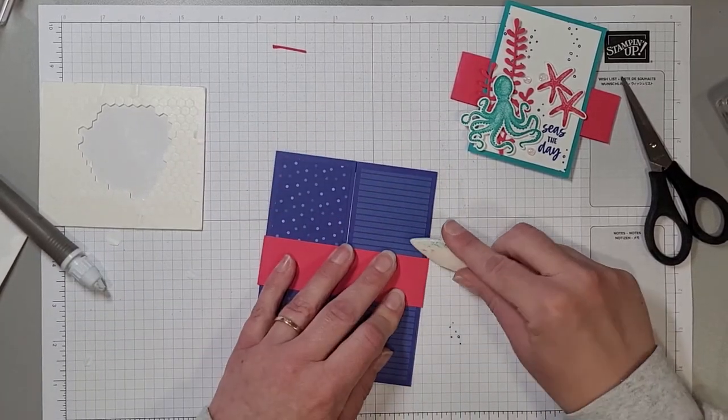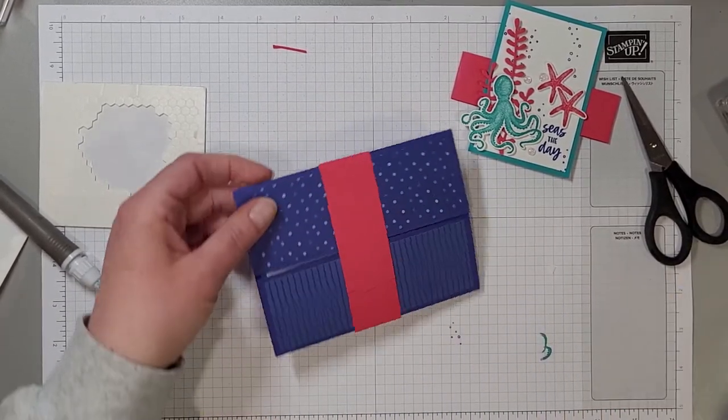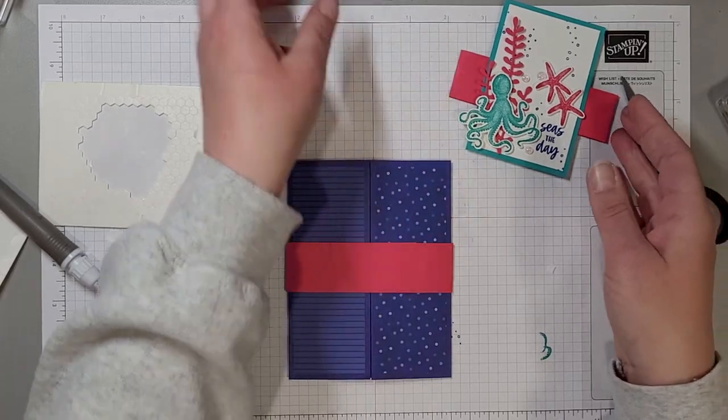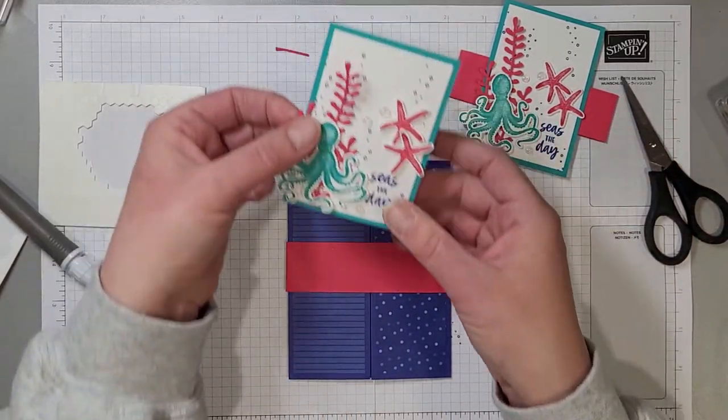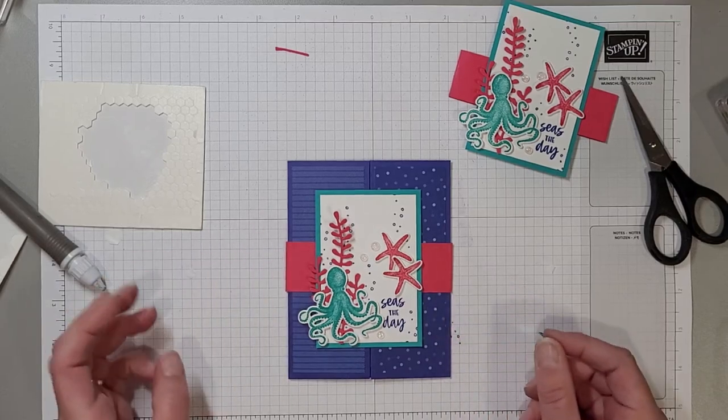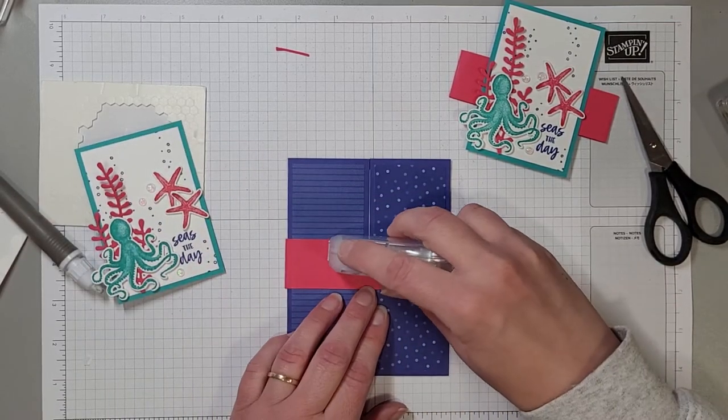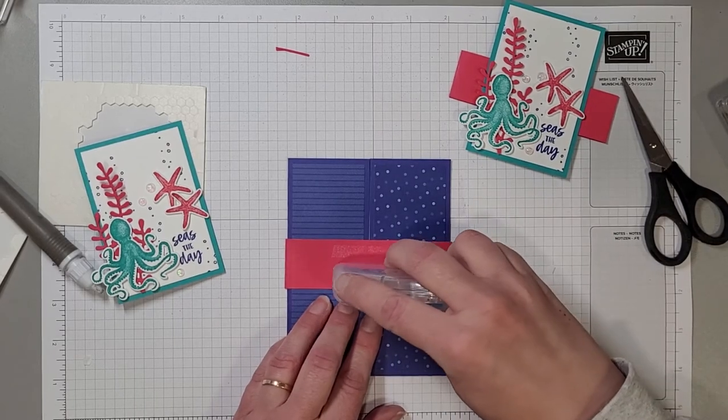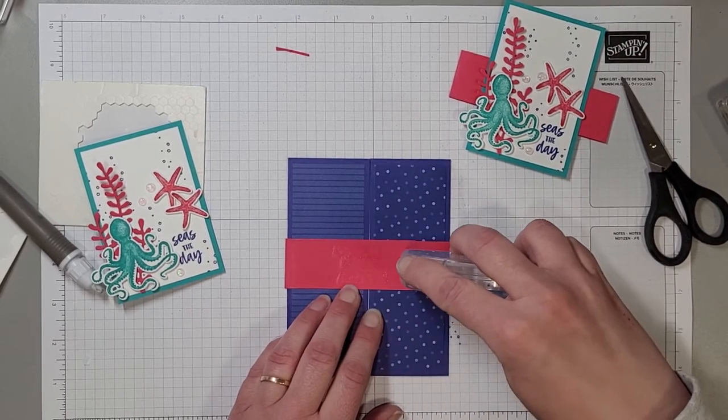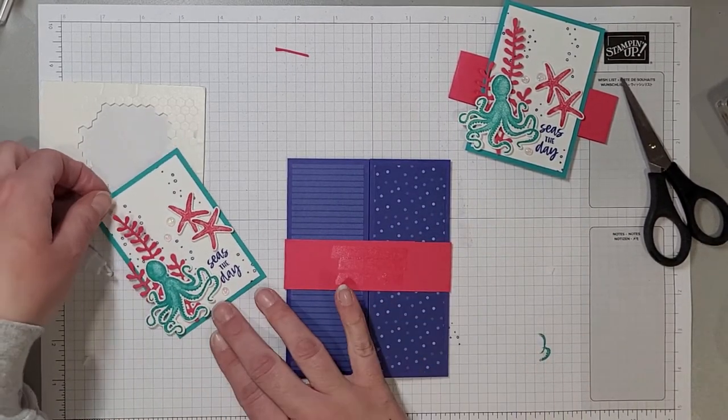Now to keep it from, to keep it nice and flat now that I know it works, I'm going to take my bone folder and I'm just going to crease those edges while it's on the card.